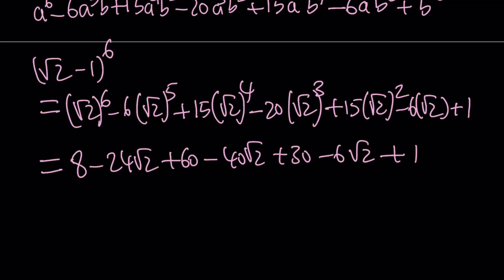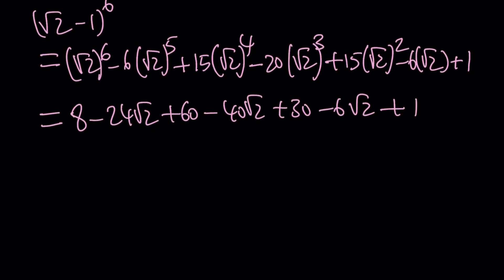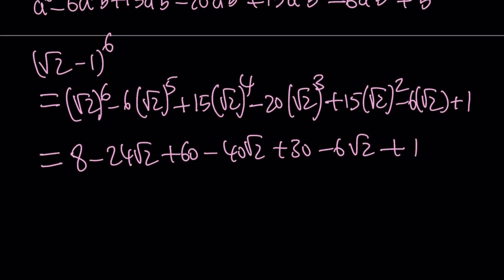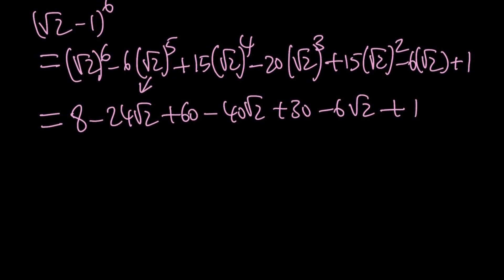8 minus 24 root 2 plus 60 minus 40 root 2 plus 30 minus 6 root 2 plus 1. Now, how I got those values, for example, if you're raising square root of 2 to the 6th power, you can just square it and then cube it, you'll get the 8. And notice that this is important. When you raise square root of 2 to an odd power, it's going to contain a square root of 2. So, it's still going to be irrational. And that's an important concept.